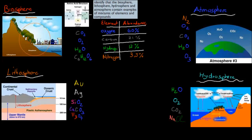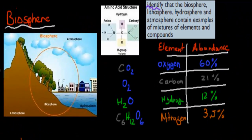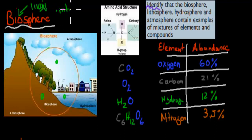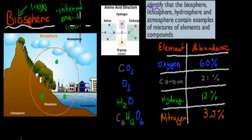So what we have to do is identify that the biosphere, lithosphere, hydrosphere, and atmosphere contain examples of mixtures of elements and compounds — meaning we need to be able to say that yes, there are mixtures and compounds in these different areas. The biosphere covers the internal environment of living things — what we can find inside living things, so in our bodies.